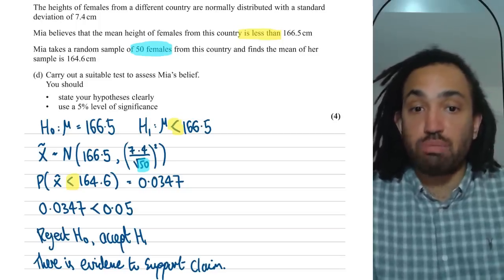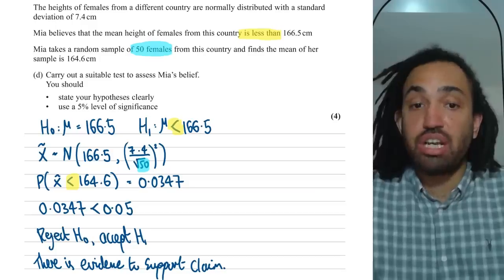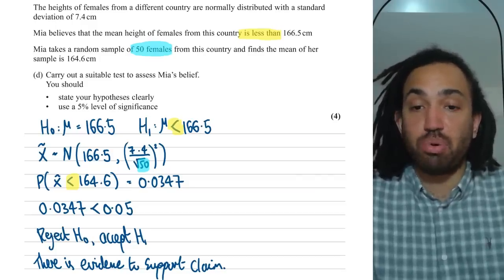So we reject the old mean H0 and we accept there's been a change and we say there is evidence to support the claim.